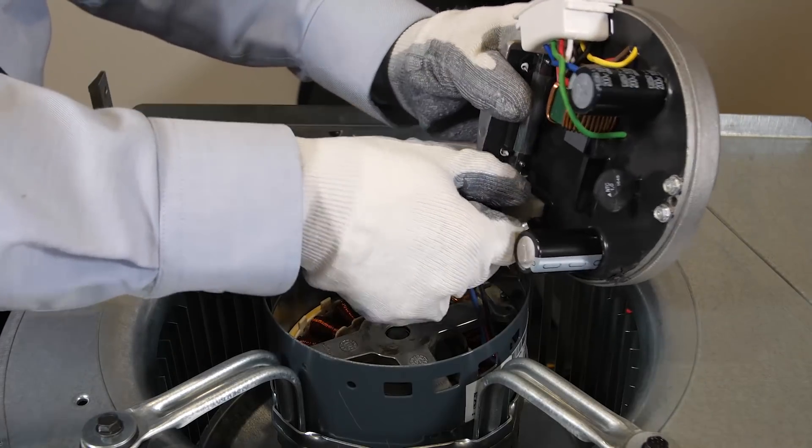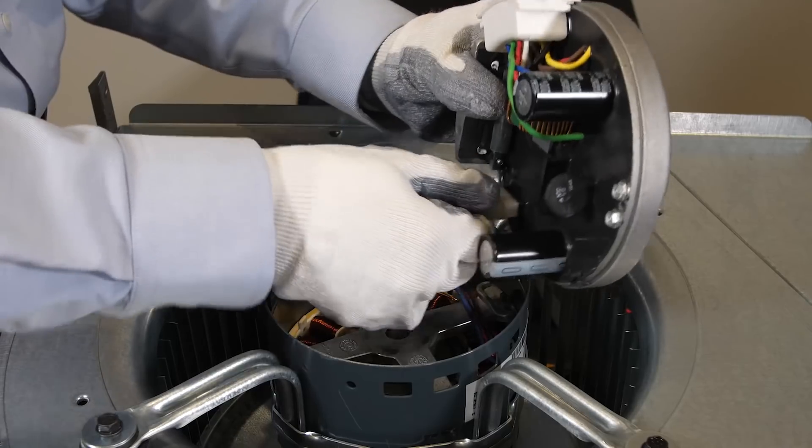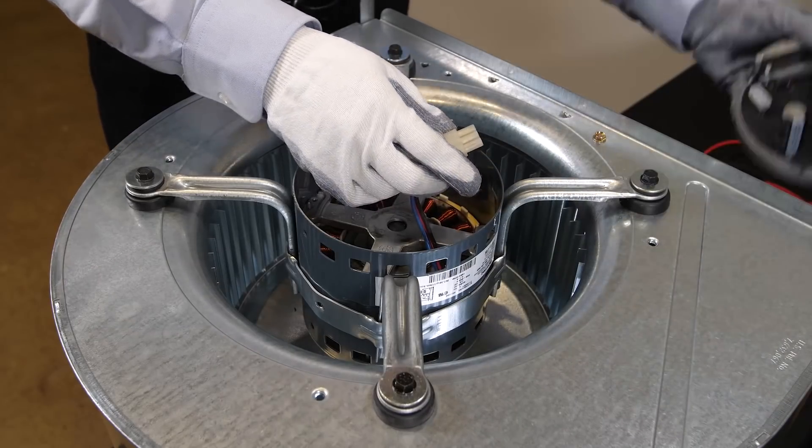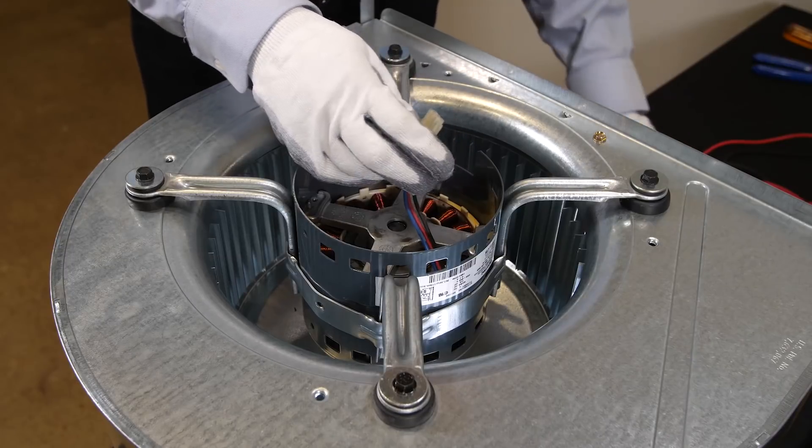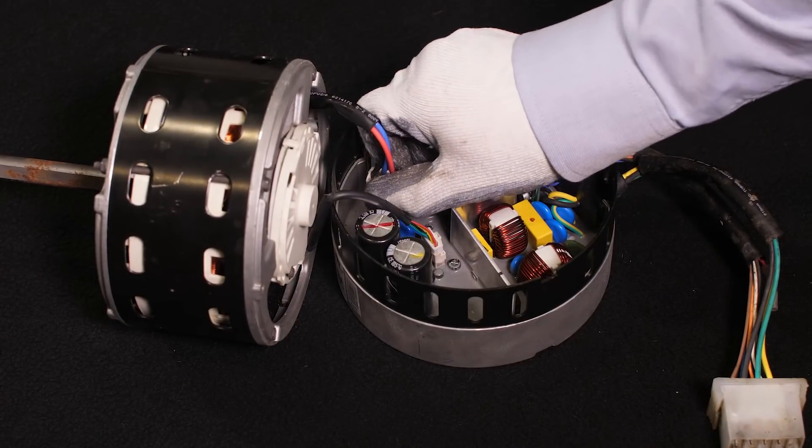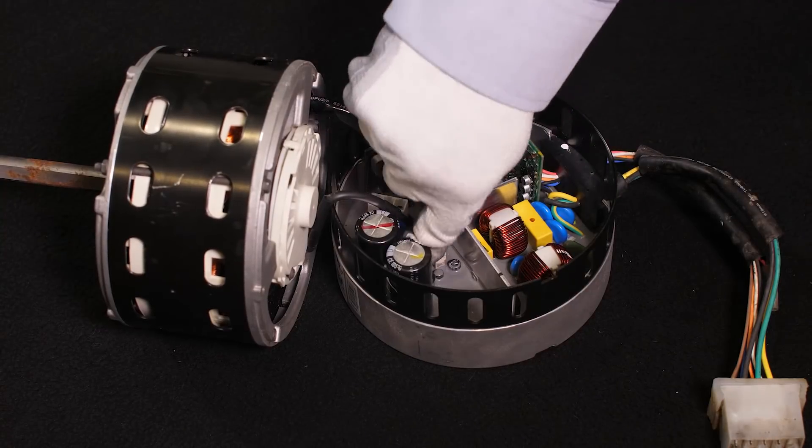Disconnect the three pin motor connector from the existing control and be careful to depress the latching mechanism before pulling the connector away from the control. Avoid pulling the wires. Depending on which type of tap select ECM motor you have, you may have an additional plug to remove.